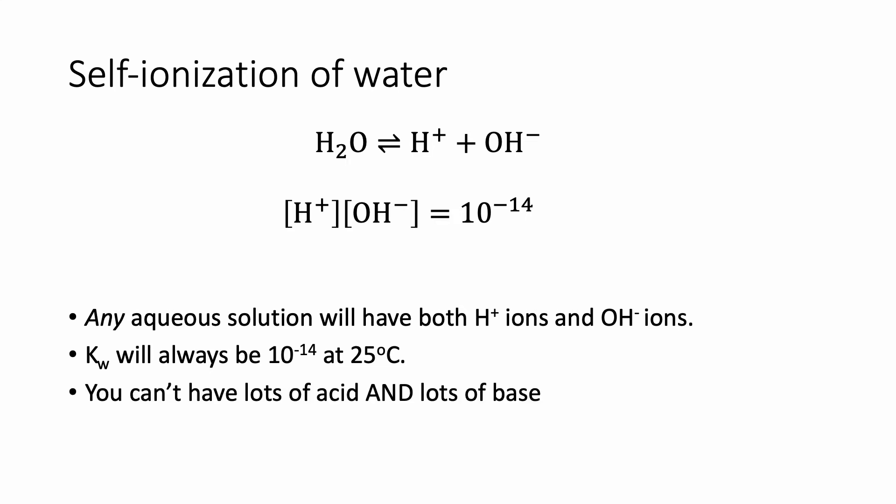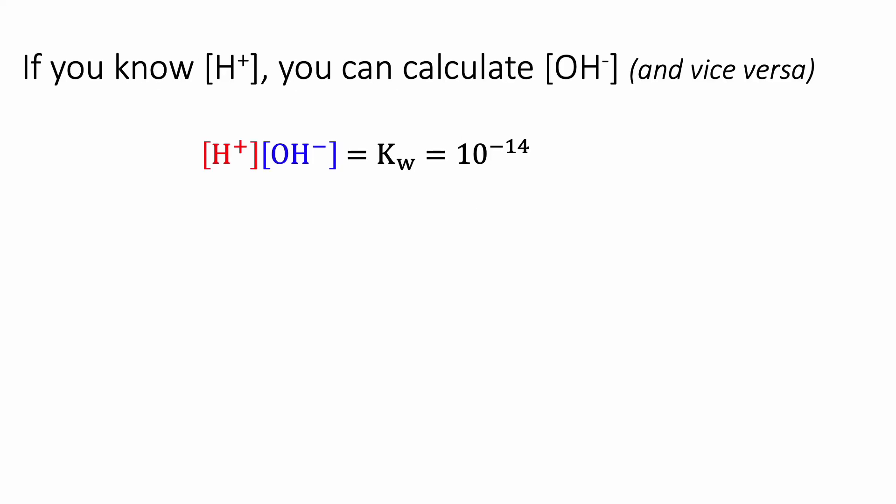If you take this in conjunction with the expression for Kw, what this means is you can't have both lots of acid (H+) and lots of base (OH-). If one of those values is large, in order to make the equilibrium constant equal to 10 to the minus 14th, the other one has to be correspondingly small. It's very useful that these two are related, because it tells us that if you know H+, you can calculate OH-, and vice versa.